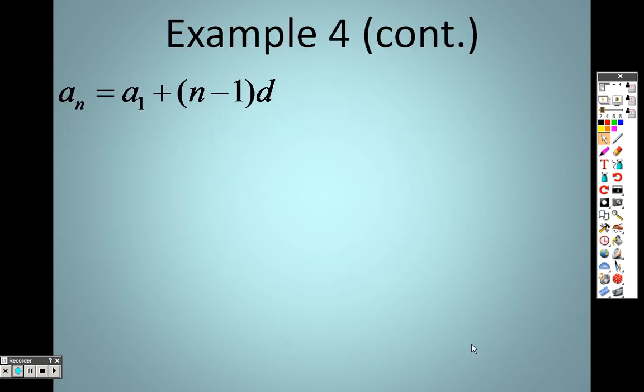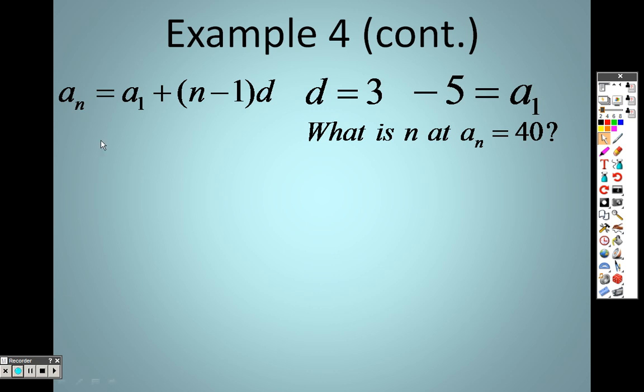Well, the problem's still not done, because I need to figure out what the actual formula is. But here's the kicker. I now know what d is. That's 3. And I also know what A is. That's a_1, which is negative 5. So, I plug those in. Plug in a negative 5 there. Plug in a 3 there. And it says, let's solve for n when a_n is 40. So, a_n, I plug the 40 in there. So, I take this 3, I distribute it through.